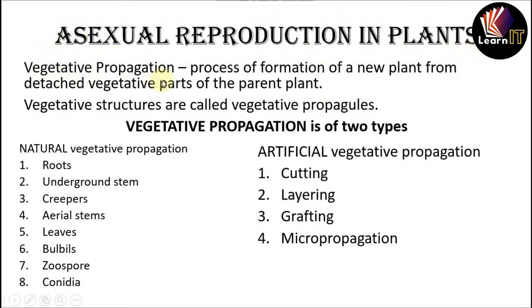Now we are moving on to asexual reproduction in plants. Asexual reproduction in plants is commonly known as vegetative propagation, and these vegetative structures are also called vegetative propagules. Vegetative propagation in plants is basically of two types: one is natural vegetative propagation and the second one is artificial vegetative propagation.